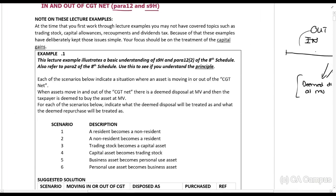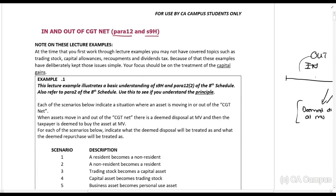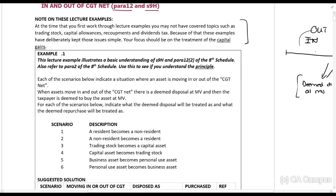Looking at these notes — I have assumed that there are certain topics you've not yet covered in your CTA, such as capital allowances, recoupments, and dividend taxes. I haven't excluded them completely because you should see them, but I don't want you to focus on those calculations. I've tried to keep it very minimal — focus on the CGT implications.